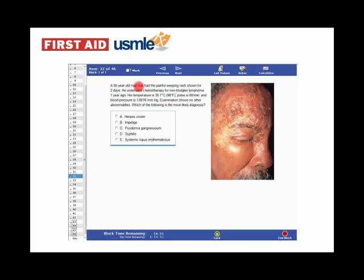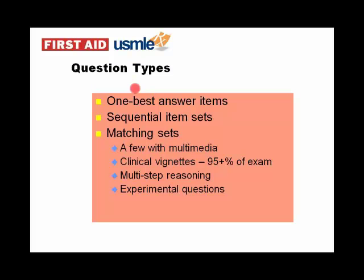FRED v2 is very similar to the old FRED v1 in the sense that you have all the navigation towards the top. You've got the ability to highlight and strike out your answers. A fair chunk of the questions will have some sort of image or visual data that you'll need to interpret, and you'll be able to track your progress in the slider bar on the left side. You can flag a question, mark it up, and so forth.